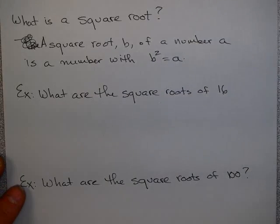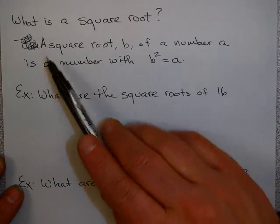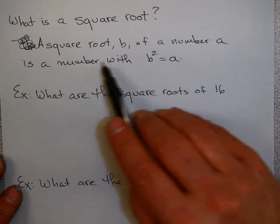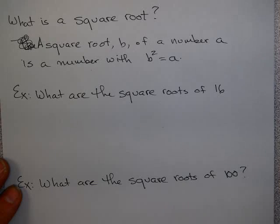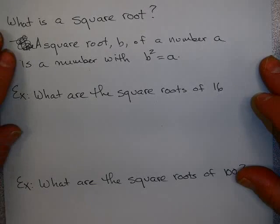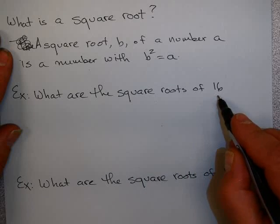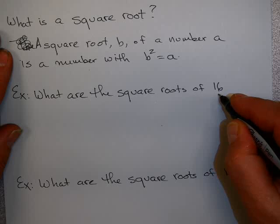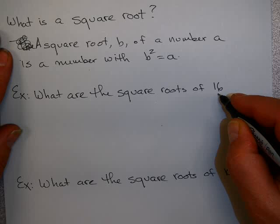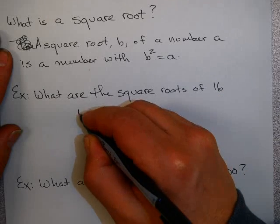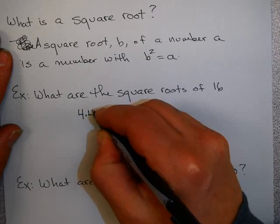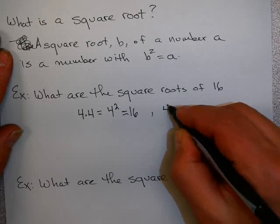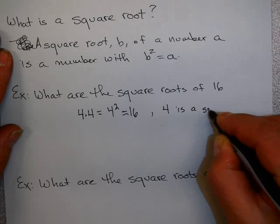Let's talk for a moment about what is a square root. A square root b of a number a is a number with b squared equal to a. Let's try to make that practical. What numbers are square roots of 16? If you think about this, you are looking for a number that when multiplied by itself equals 16. So 4 times 4, or 4 squared, is equal to 16. So certainly 4 is a square root of 16.